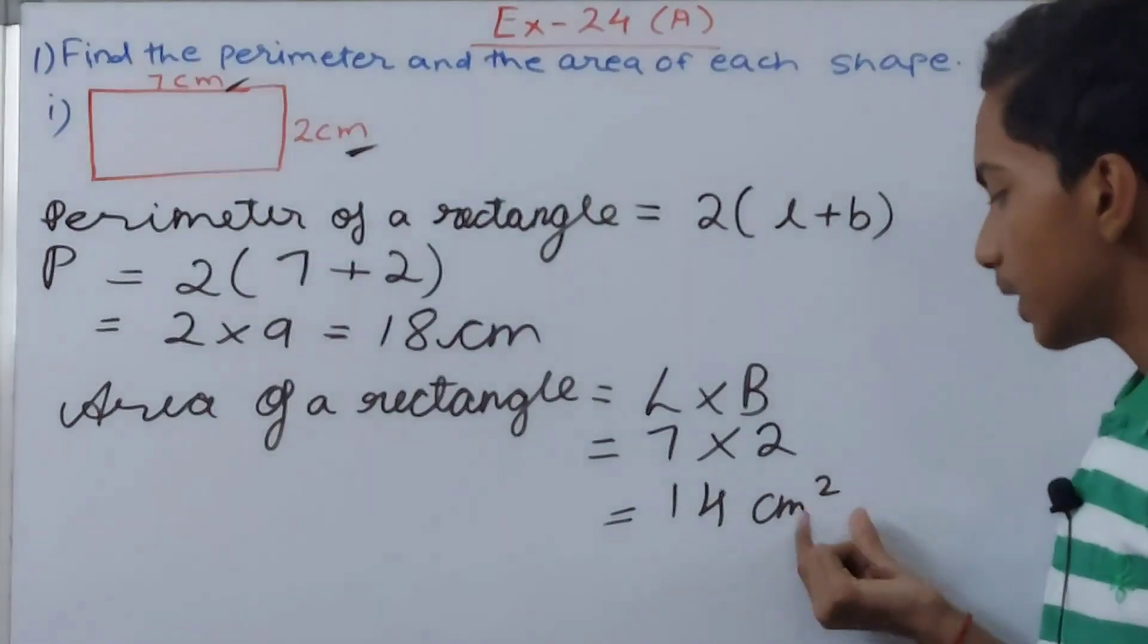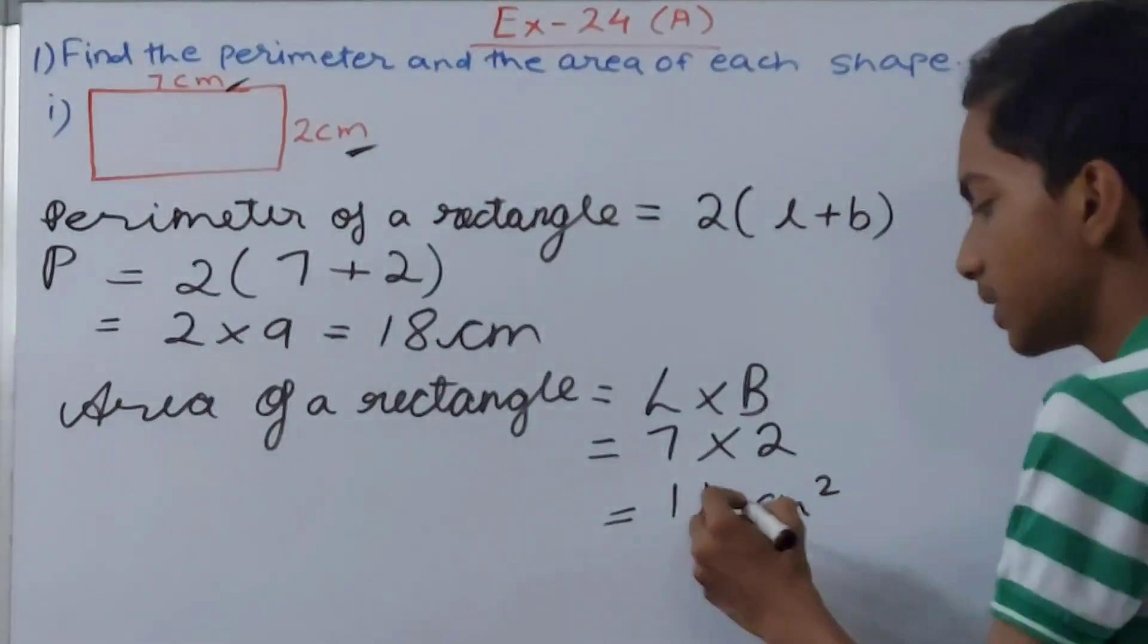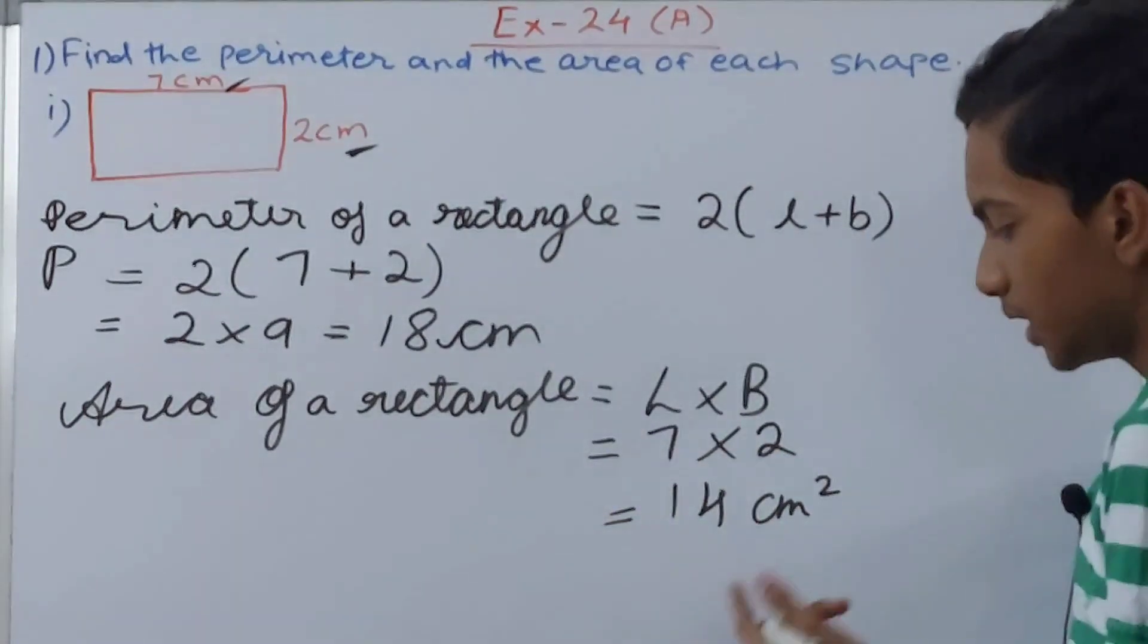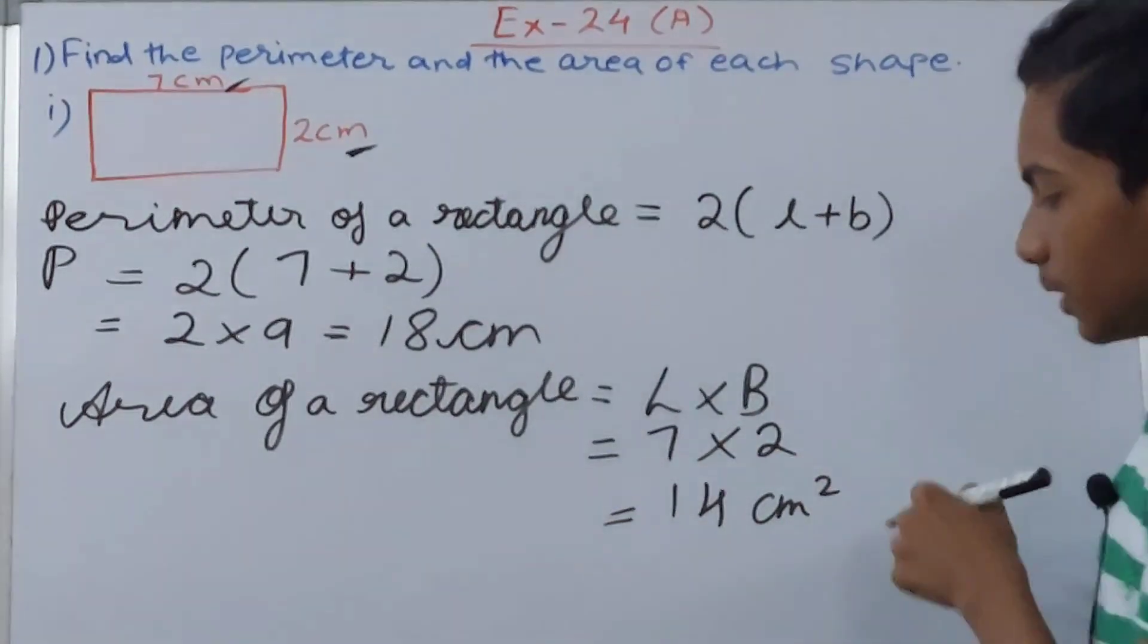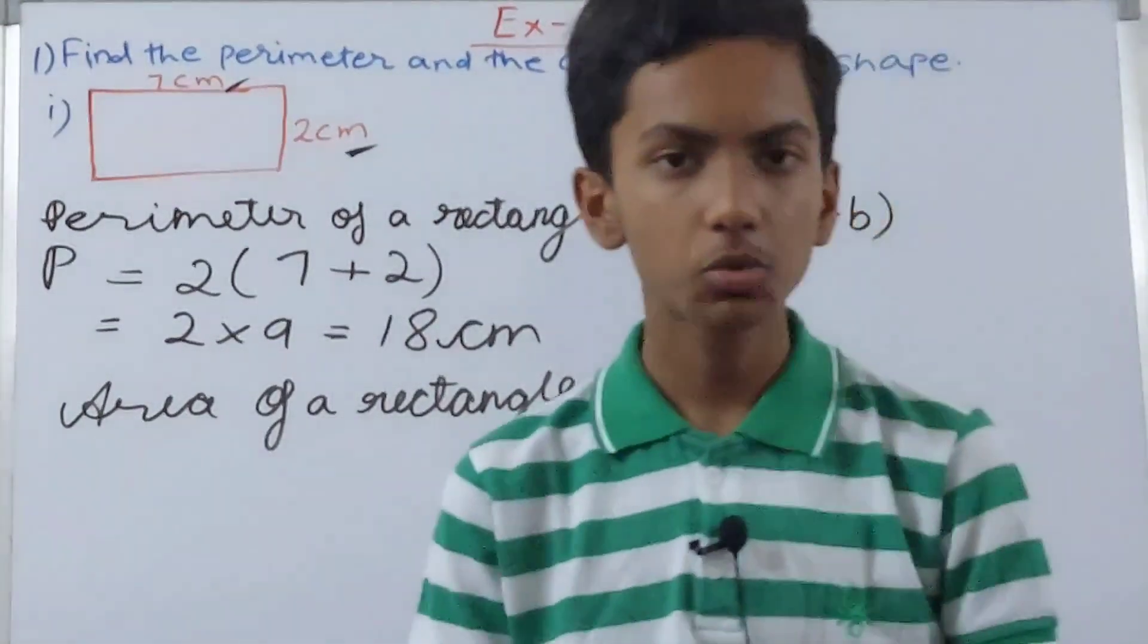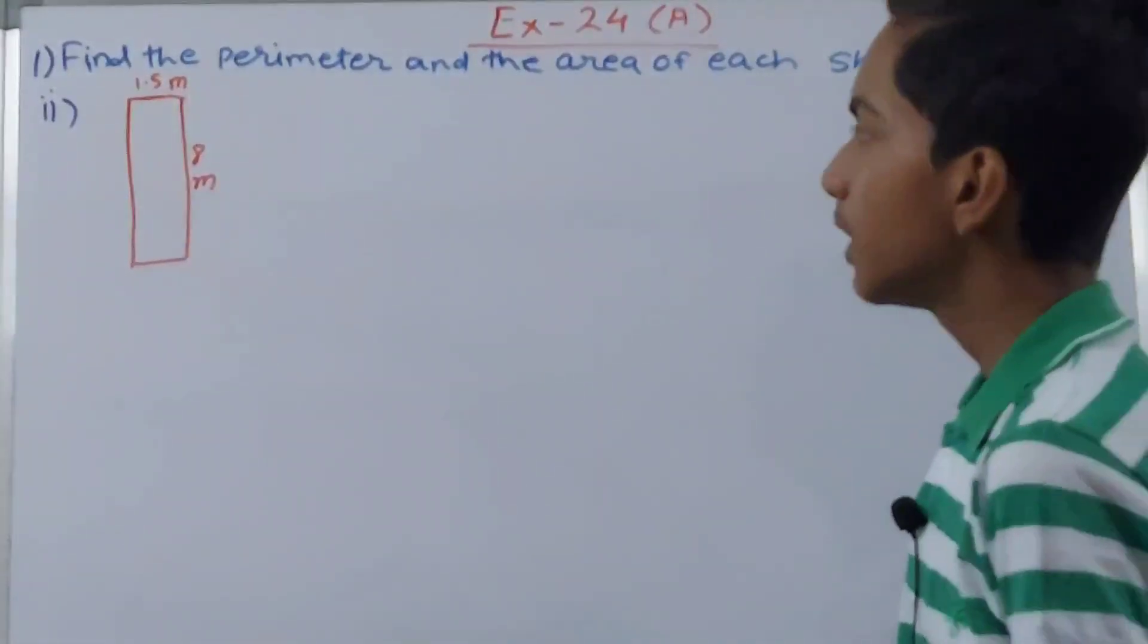Whenever we are calculating the area of any figure, the area is always expressed as the number with the unit, centimeter or meter, and then a 2 on top of it, that means square. So square centimeter or square meter. Now let's move on to the next part.